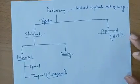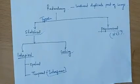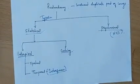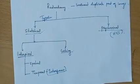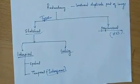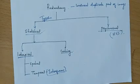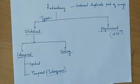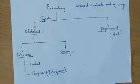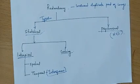The next one is psychovisual redundancy. Psychovisual redundancy is associated with the human visual system. That means our human visual system cannot perceive all the details of pixel information.